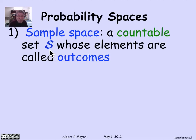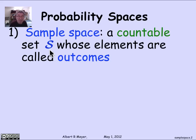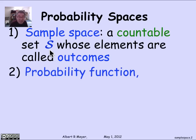The examples we've seen so far have only had a finite number, but we will shortly see a bunch of examples where we really need an infinite number, but only a countable infinite number. That's part of the definition of a probability space: the set of outcomes.